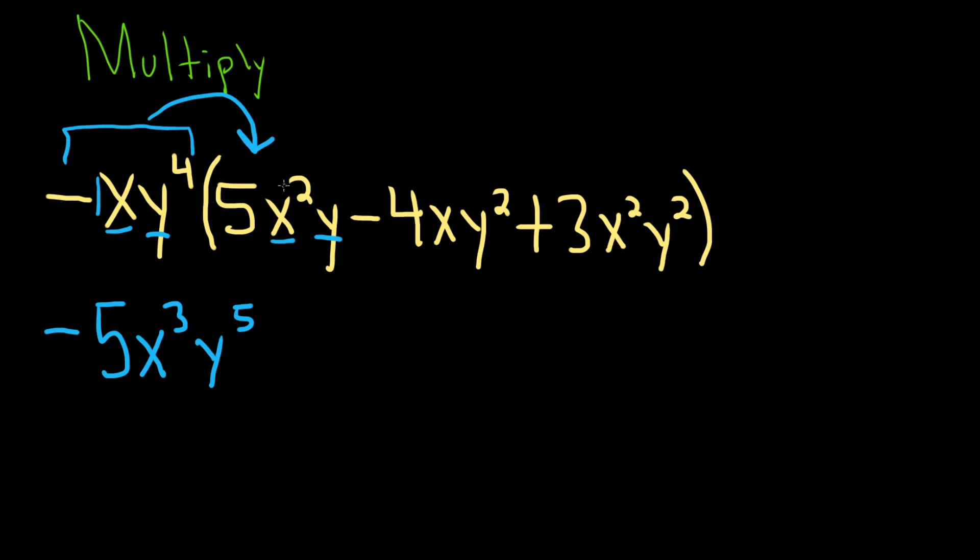In the next step, there's already a negative. So negative and negative is going to give us a positive 4. x times x is going to give us x squared. And y to the 4th times y squared, that will give us y to the 6.